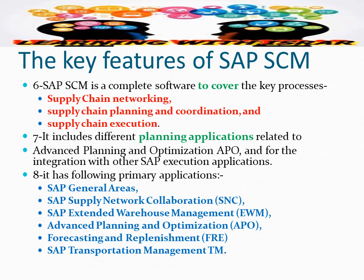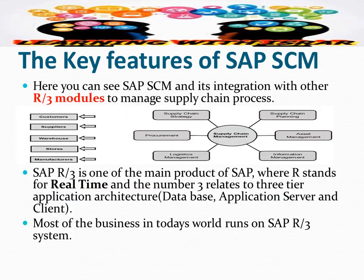SAP Supply Chain Management is a complete software covering the key processes in supply chain management: supply chain networking, supply chain planning and coordination, and supply chain execution. It also includes different planning applications related to Advanced Planning and Optimization (APO) and integration with other SAP execution applications. The primary applications include SAP Global Available-to-Promise, SAP Supply Network Collaboration, SAP Extended Warehouse Management, Advanced Planning and Optimization, Forecasting and Replenishment, and SAP Transportation Management.